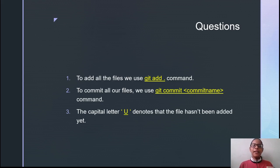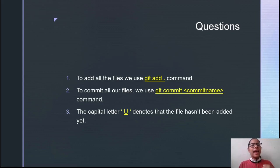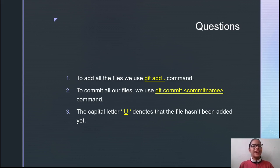The capital letter U denotes that the file hasn't been added yet — U means untracked. A means the file has been added to the staging area. So these were the questions that were asked in the previous session.